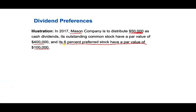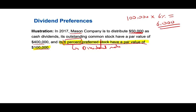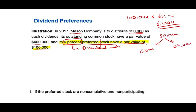Now before we proceed, there's an important term we need to be familiar with. The preferred dividend — they know how much they're going to be getting per share because the dividend rate is stated. So they know they're going to be getting 6% of par value, which is $100,000. What does that mean? It means every time we pay a dividend, the preferred shareholders get their money first, which is 6% of $100,000 — they get paid $6,000. So if we're distributing $50,000, $6,000 will go to the preferred and the remaining $44,000 will go to the common.